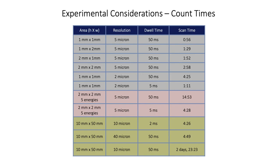For example, mapping a 2 by 2 millimeter area with 5-micron resolution at 50 millisecond dwell time per pixel takes about 3 hours. If you then map the same area at five different energies for chemical speciation, it takes 15 hours — about two shifts of beam time at SSRL. If you need to map a larger area such as 10 by 50 millimeters, mapping at 5-micron resolution would take more than a day, but using a coarser 40-micron resolution allows you to complete the map in five hours.